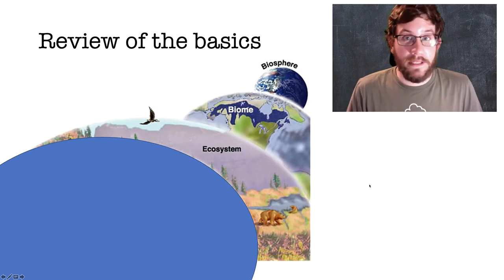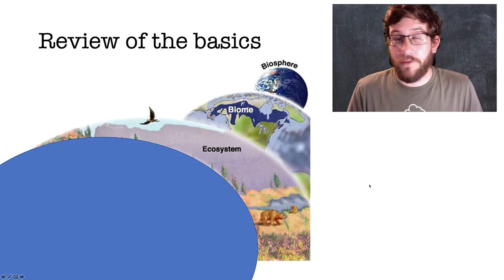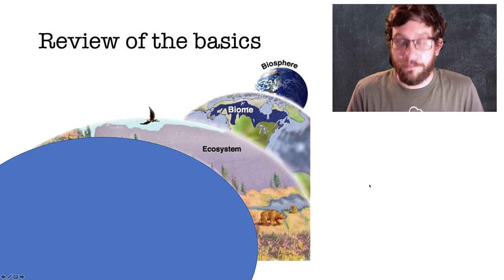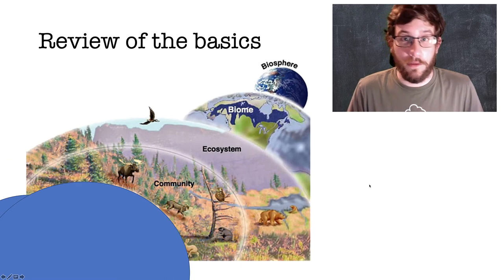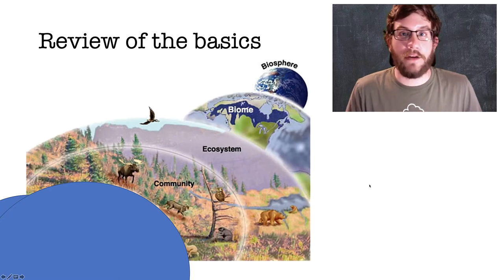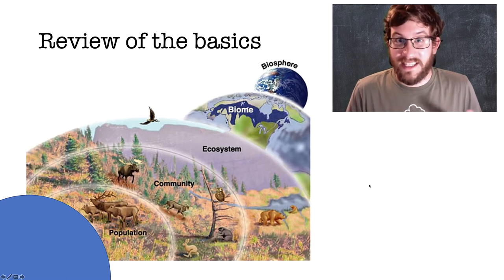The next thing we have is the ecosystem itself, which is made up of interactions between abiotic and biotic — or non-living and living — things. We zoom in a little further and we have a community, which consists of the interactions of all the different organisms in a specific area and how they interact with each other — no abiotic factors, just biotic.